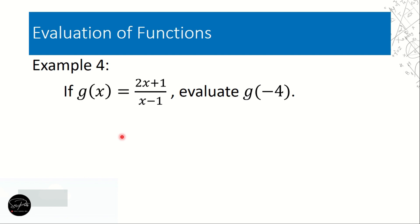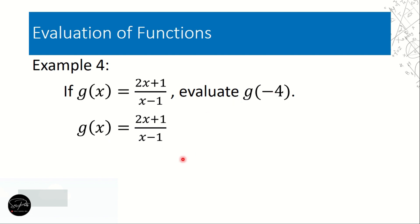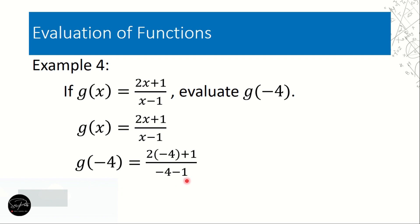The operation is more complex here because we have operations above the fractional bar and below it — the bar indicates a grouping symbol. We solve the numerator and denominator separately, then divide. Copy the function: g(x) = (2x + 1)/(x - 1). Remove x and substitute -4: g(-4) = (2 times -4 + 1) / (-4 - 1).